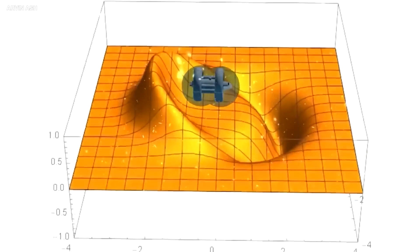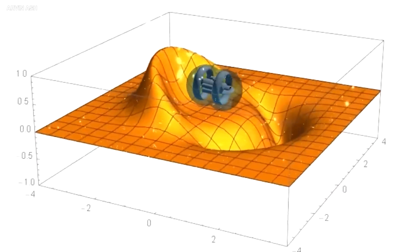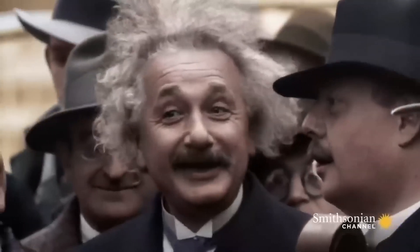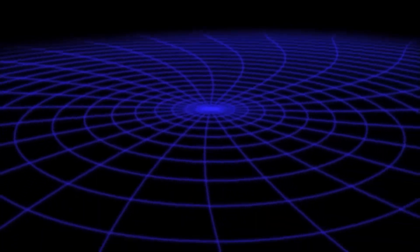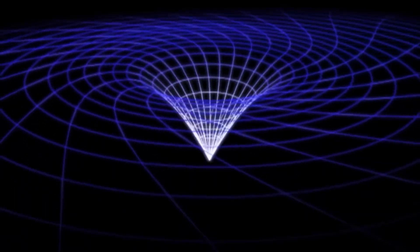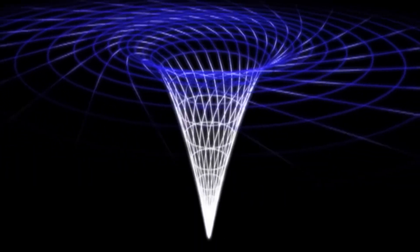Einstein's theory suggested that massive objects could warp the fabric of space-time, causing it to curve and distort around them. This revolutionary concept challenged the traditional view of gravity as a purely attractive force between objects.